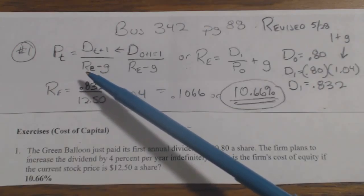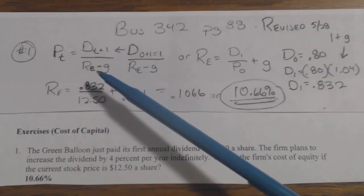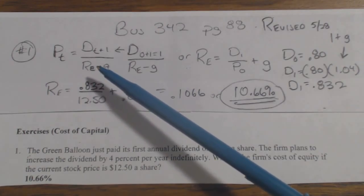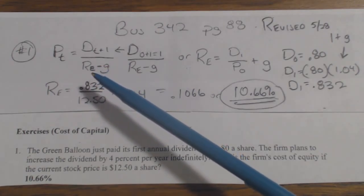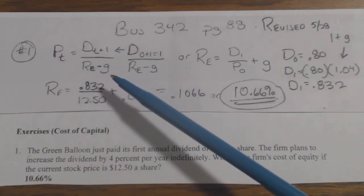They call it cost of equity if it's the company's cost, return of equity if it's the shareholder's return, but it's the same thing. RE minus G.